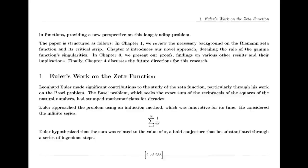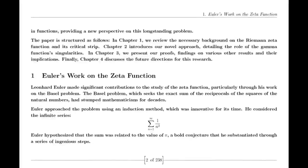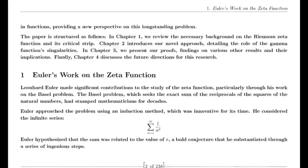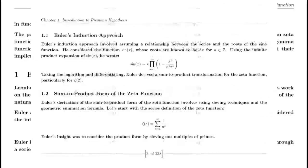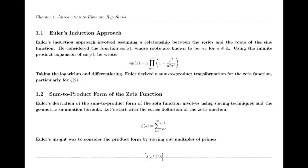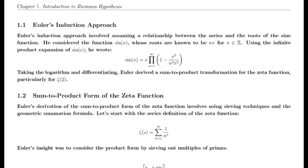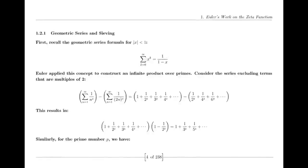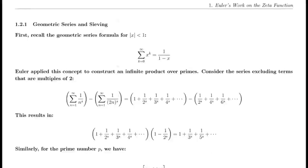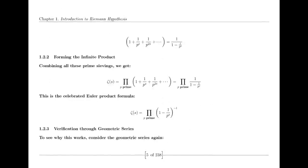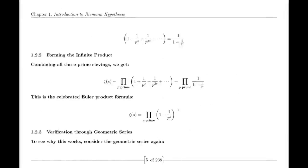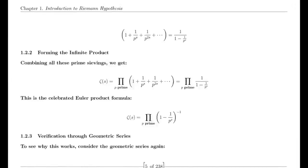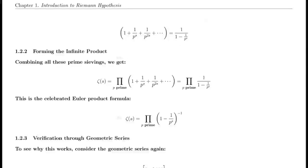One of Riemann's major discoveries was the reflection formula for the Zeta function. This formula demonstrates a symmetry between the values of the Zeta function at S and 1 minus S. Specifically, it shows that Zeta(1−S) can be expressed in terms of Zeta(S) using factors involving π, the gamma function, and trigonometric functions. This reflection formula is fundamental to the theory of the Zeta function and provides deep insights into its structure.